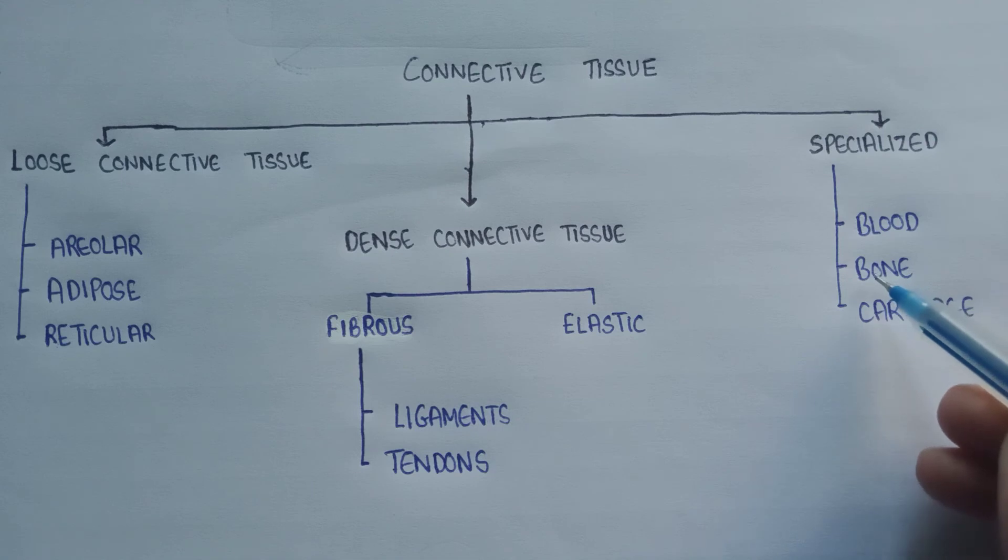Second is bone. Bone is a hard material and it consists of the cells known as osteocytes. It provides support to the body and maintains the body framework.